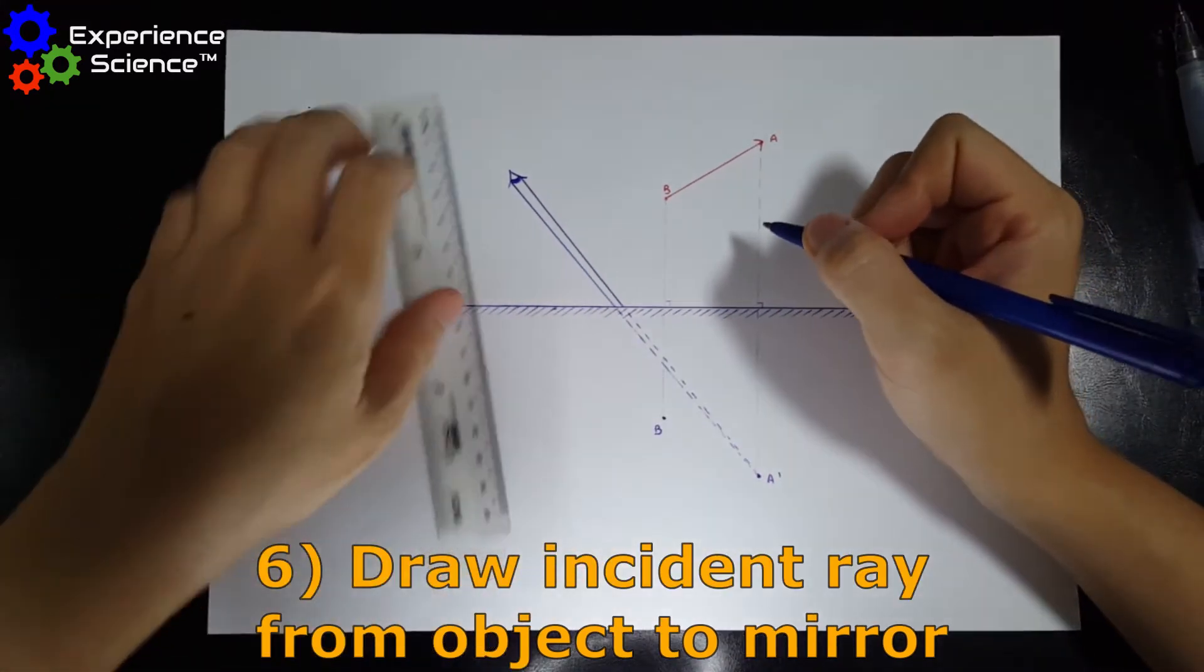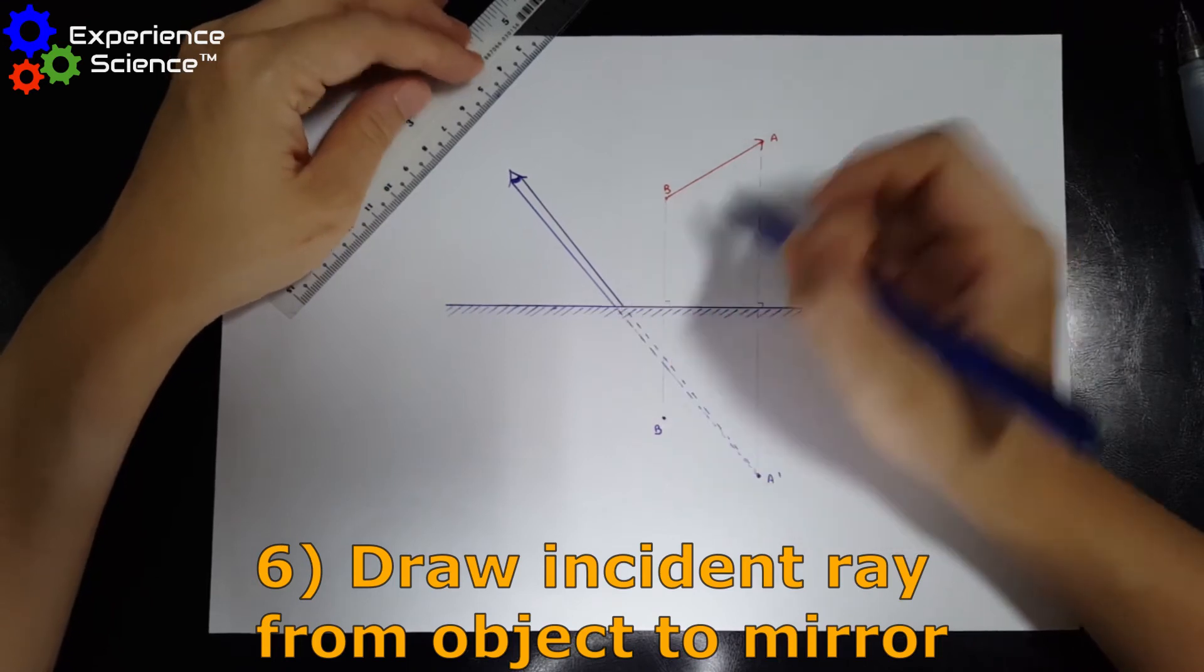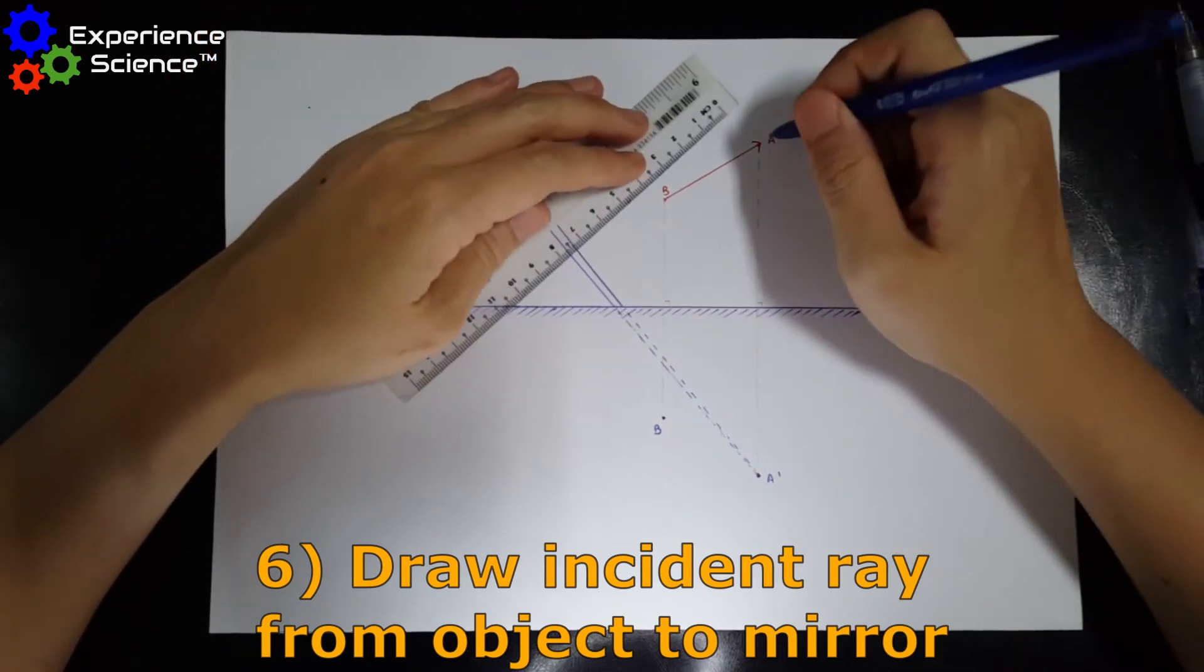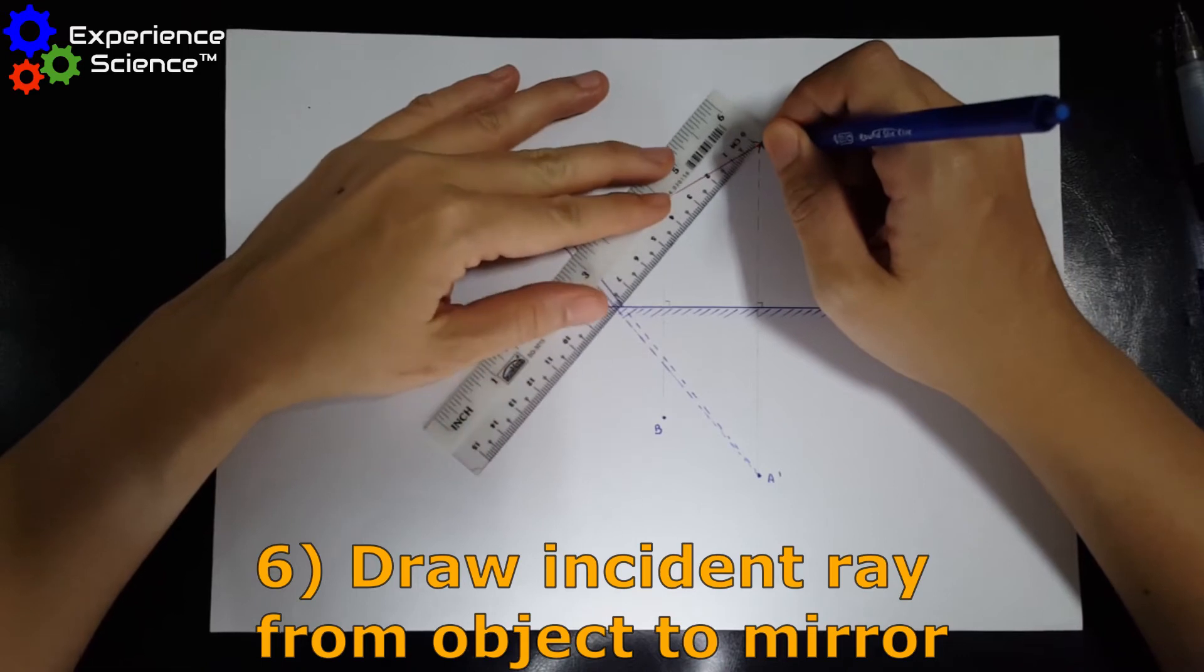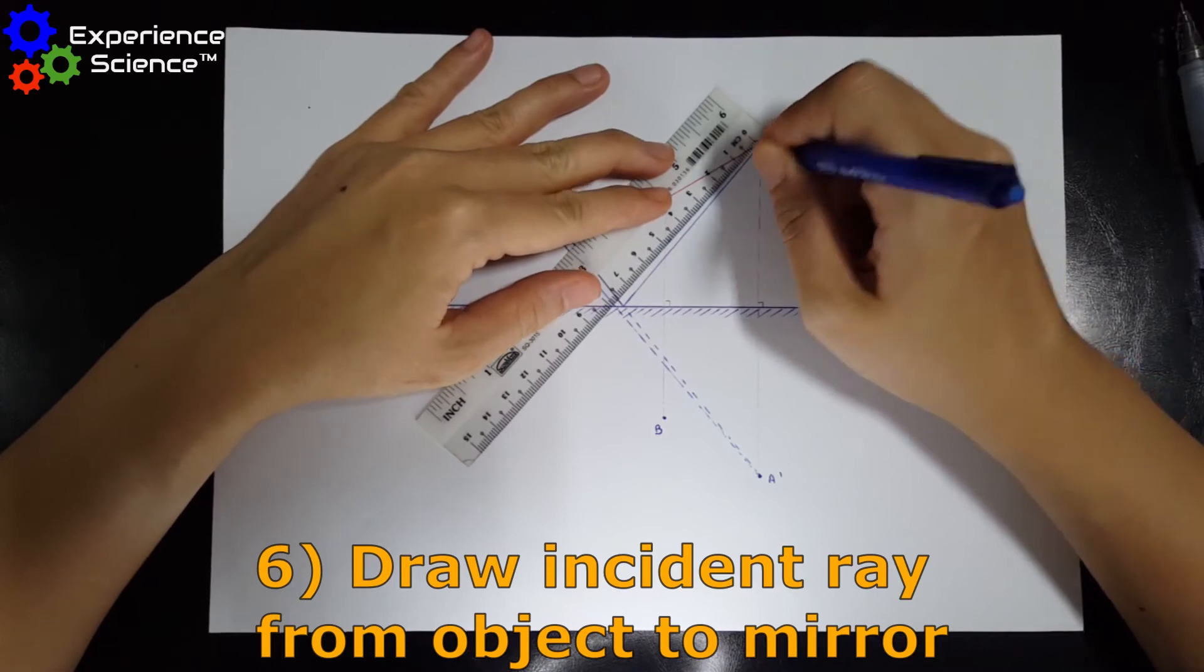The next step is to join this point where the light ray touches the mirror to the object itself. So I'm joining the first point to A and the second point to A.